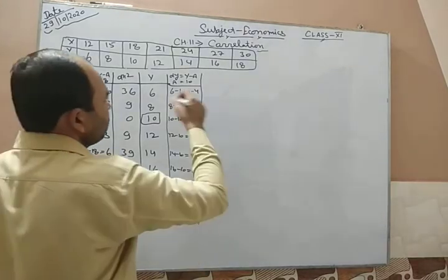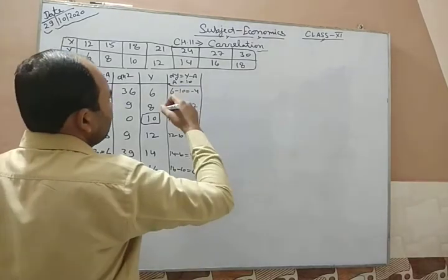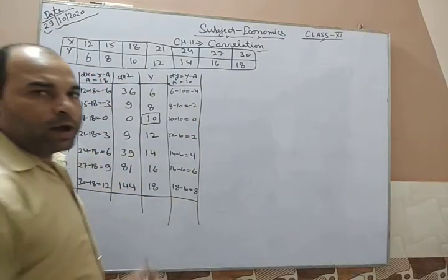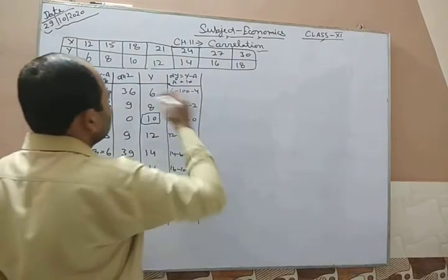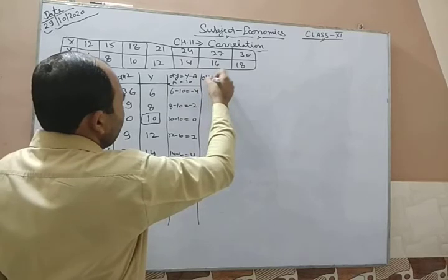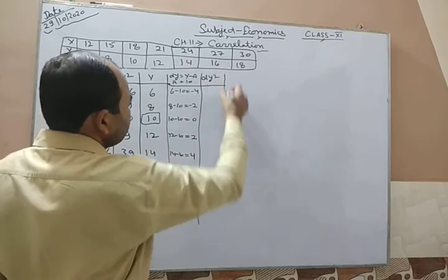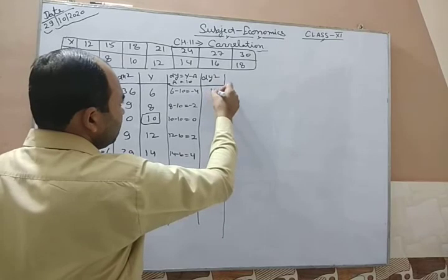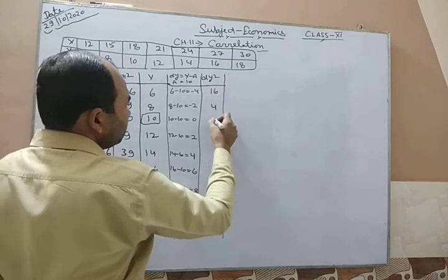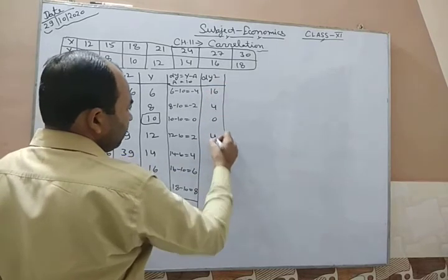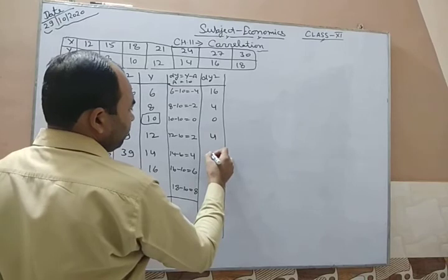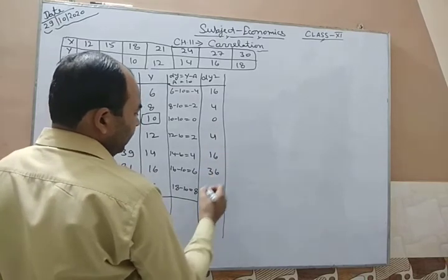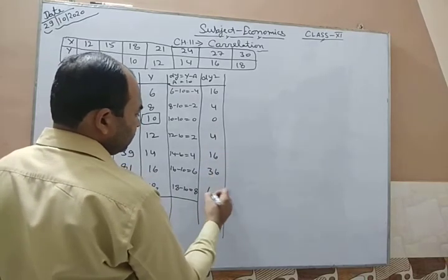Now we calculate dy squared. The values are: (−4)² = 16, (−2)² = 4, 0² = 0, 2² = 4, 4² = 16, 6² = 36, and 8² = 64.